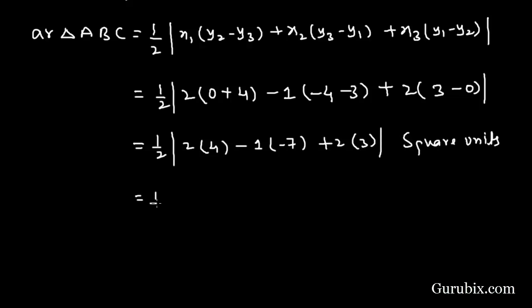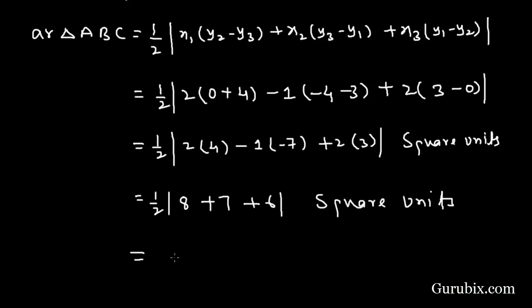This gives 1/2 times |8 + 7 + 6| square units, which means 21/2 square units. So this is the solution of the question.